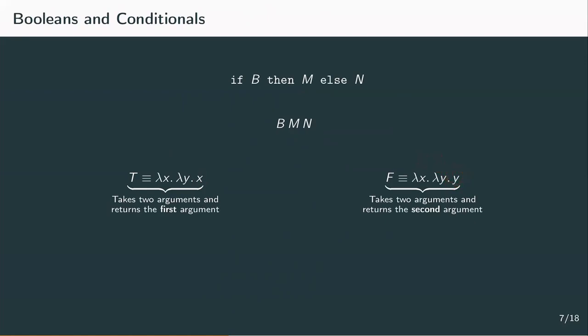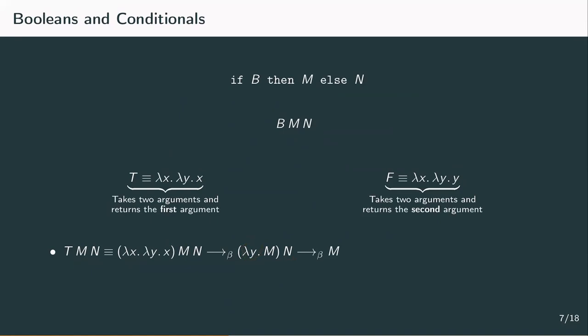Let's quickly confirm that this works as intended. For the term true, we substitute all occurrences of x by m and get the term lambda y dot m applied to n. In the second reduction step, we substitute all occurrences of y by n, but there are no occurrences of y, so in the end we just get the term m. The computations for false are quite similar: nothing changes by reducing the x redex as x doesn't occur in the term, and we just return the second argument n. So these two terms actually represent the behavior of Boolean values in an if-then-else conditional.